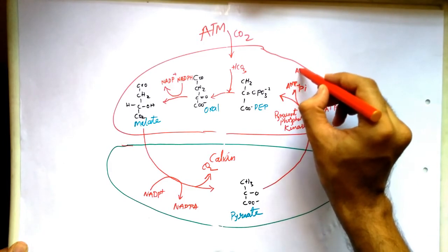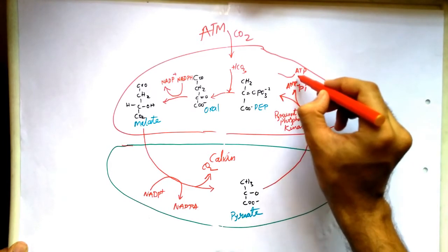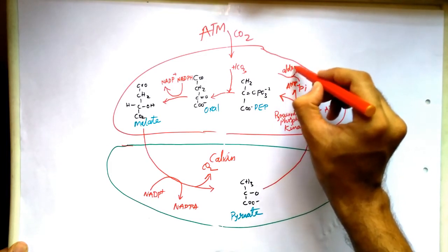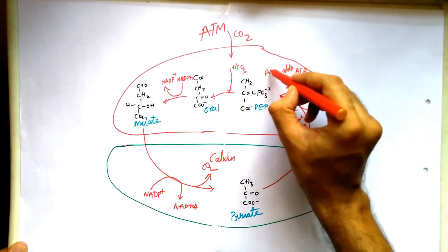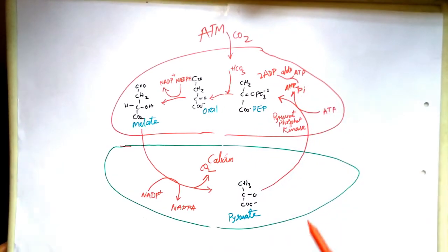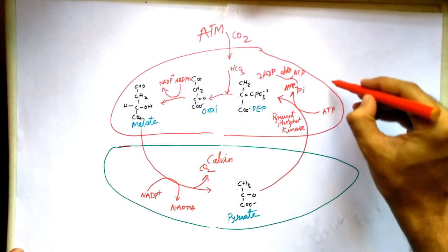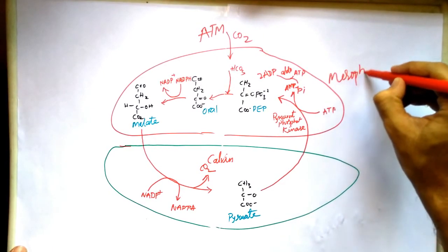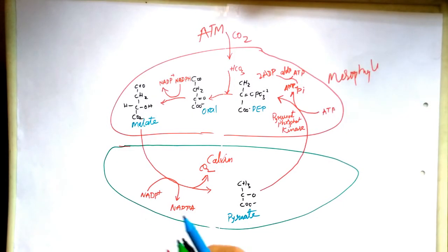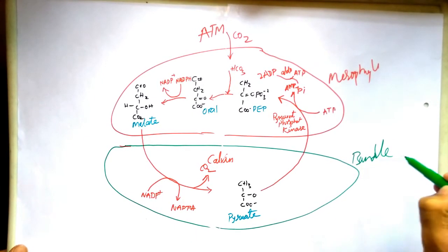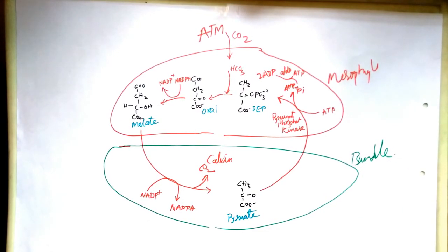After decarboxylation, pyruvate is formed. This pyruvate is then taken back into the mesophyll cells, where pyruvate phosphate kinase acts on it. Here ADP, AMP, and Pi are involved, and another ATP combines. Hydrolysis takes place and ADPs are formed.